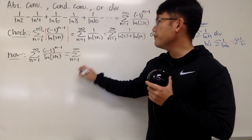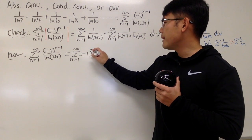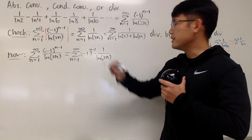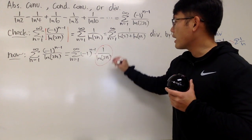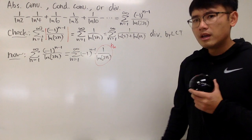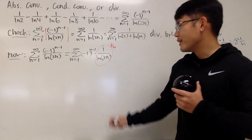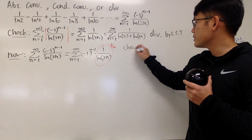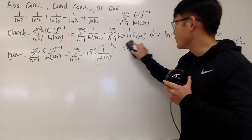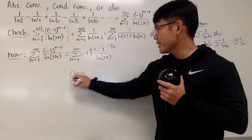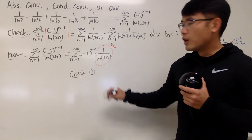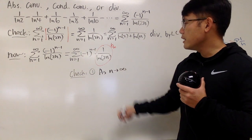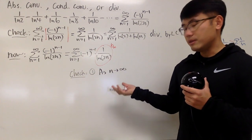We look at the sum as n goes from 1 to infinity of negative 1 to the n-1 times 1 over natural log of 2n. We treat 1 over natural log of 2n as b_n. We have to check two conditions. First, we check: does b_n approach 0 as n approaches infinity?